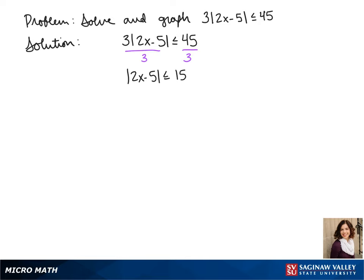Since the absolute value of 2x minus 5 has to be less than 15, it could be any values between or including negative 15 and positive 15. So that's how we set up our sandwich inequality.